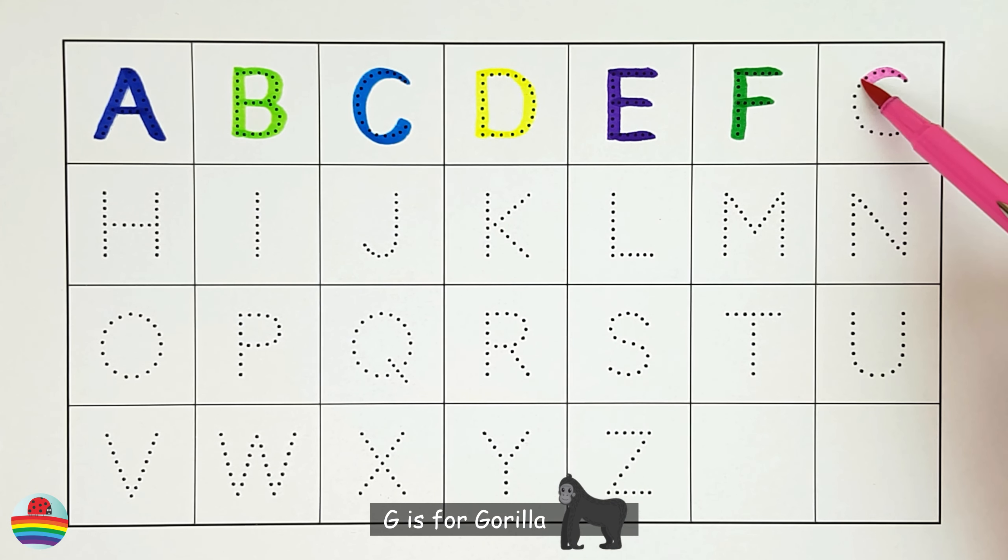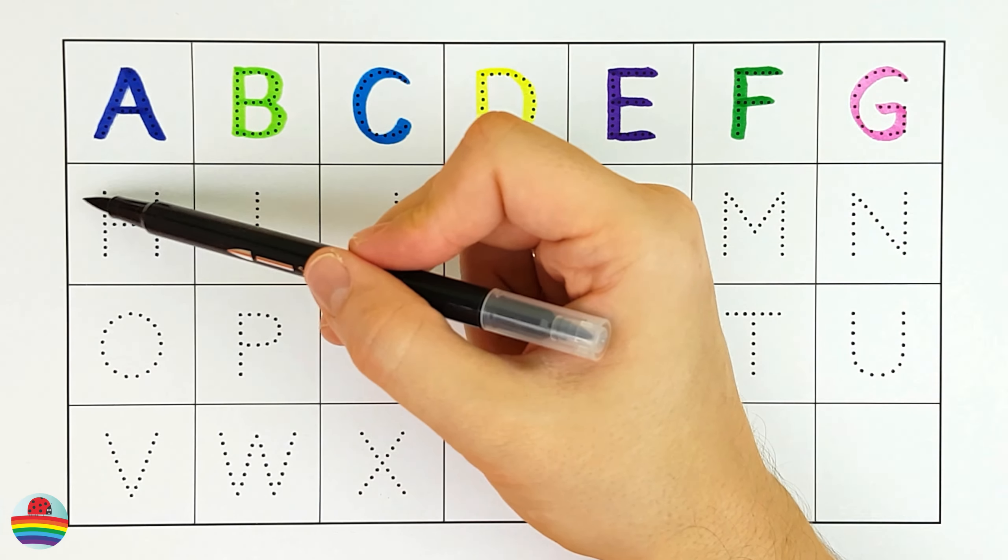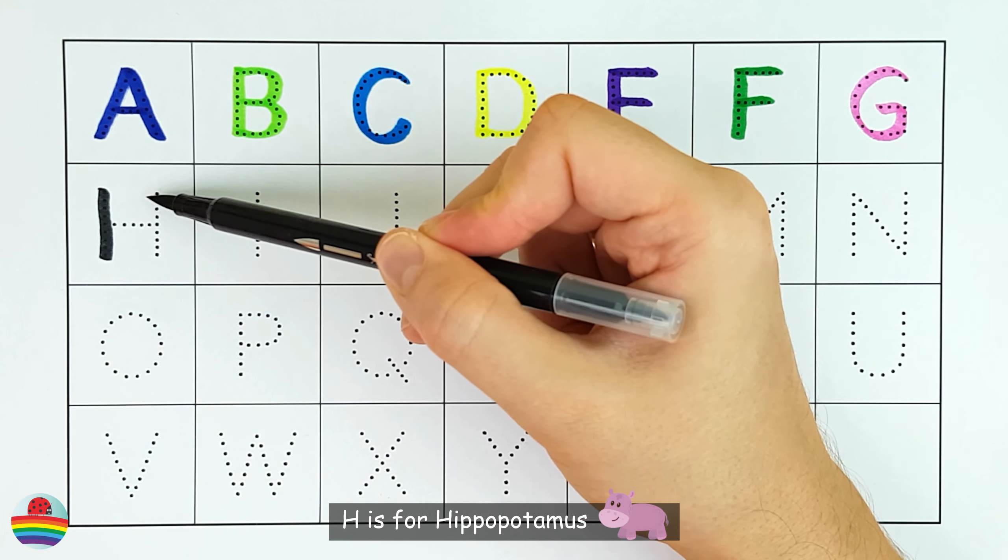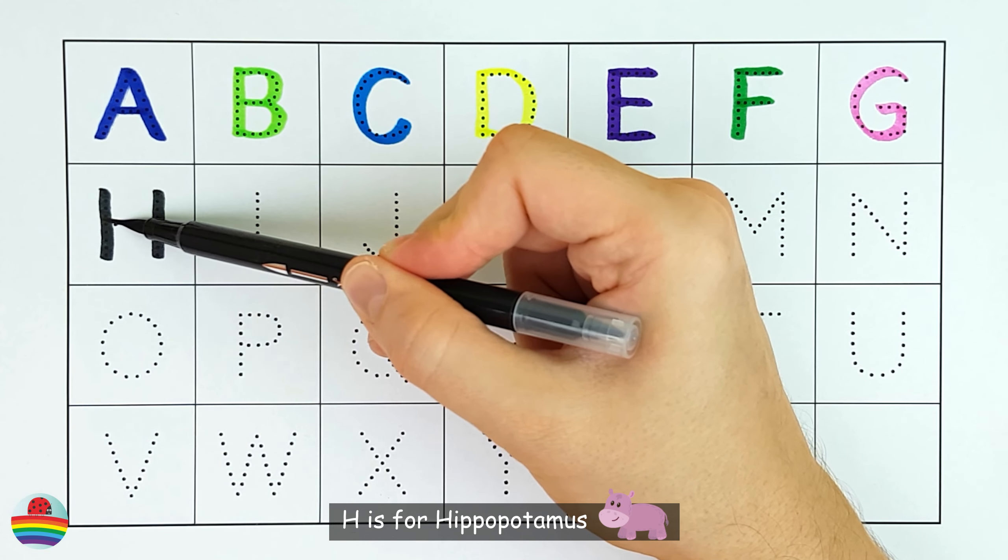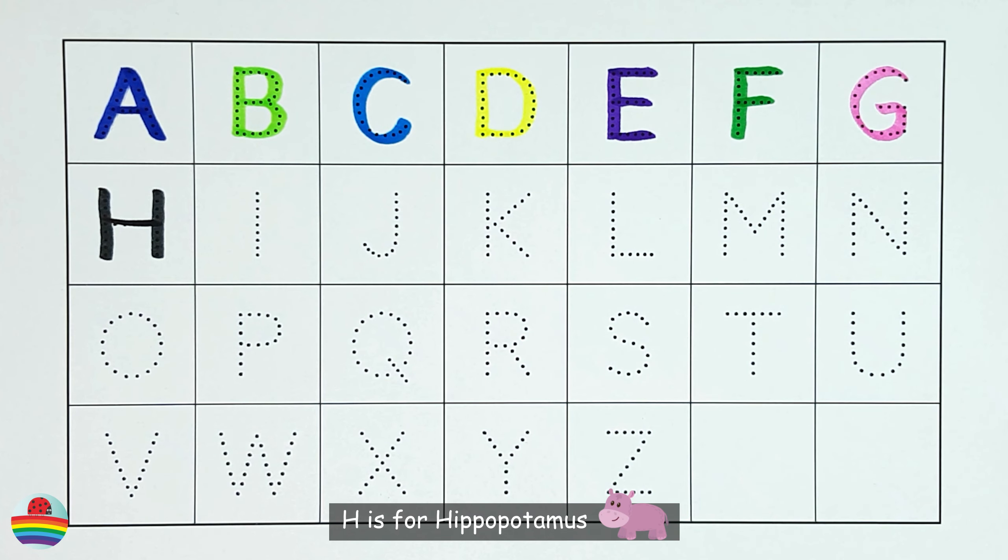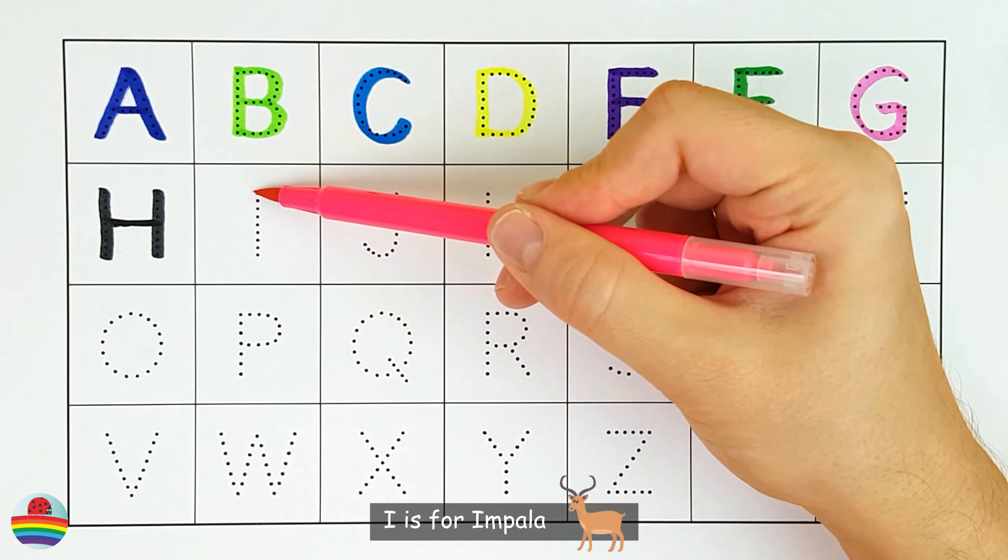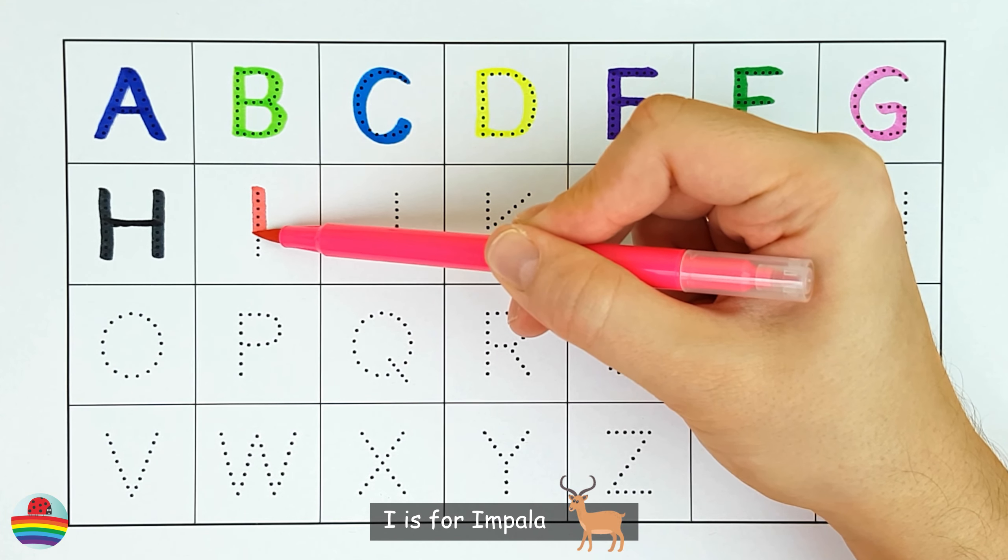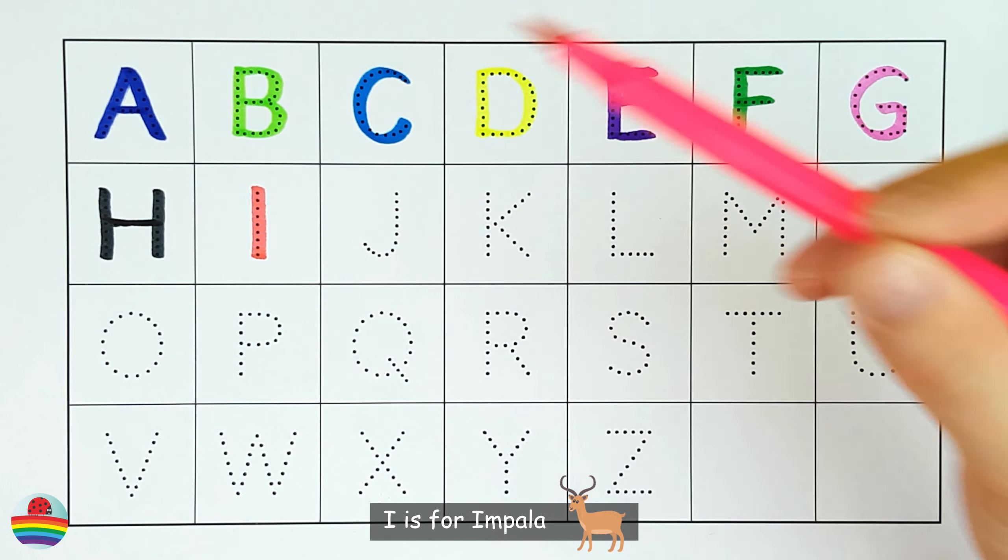G. G is for Gorilla. H. H is for Hippopotamus. I. I is for Impala.